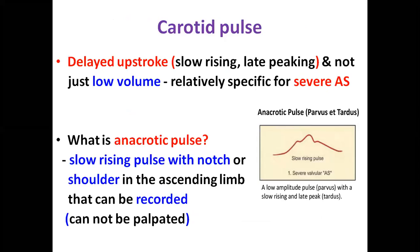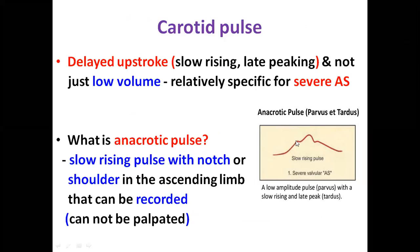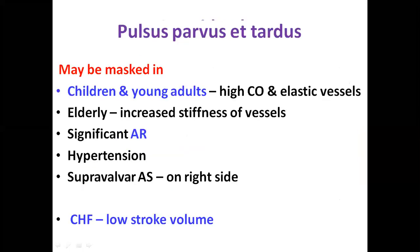The anacrotic pulse is low-rising and late-peaking — the delayed upstroke is more important than low volume to signify severity. Specifically, it is a slow-rising pulse with a notch or shoulder on the ascending limb. In elderly patients with non-elastic stiff vessels it is difficult to appreciate and may be masked by associated hypertension or significant AR. In supravalvular aortic stenosis, the Coanda effect causes the jet to preferentially flow into the innominate artery. Apex-carotid delay — palpating the carotid and apical impulse simultaneously, appreciating a distinct lag between the systolic thrust at the apex and the peak of the carotid pulse — is highly sensitive with high specificity and positive predictive value.